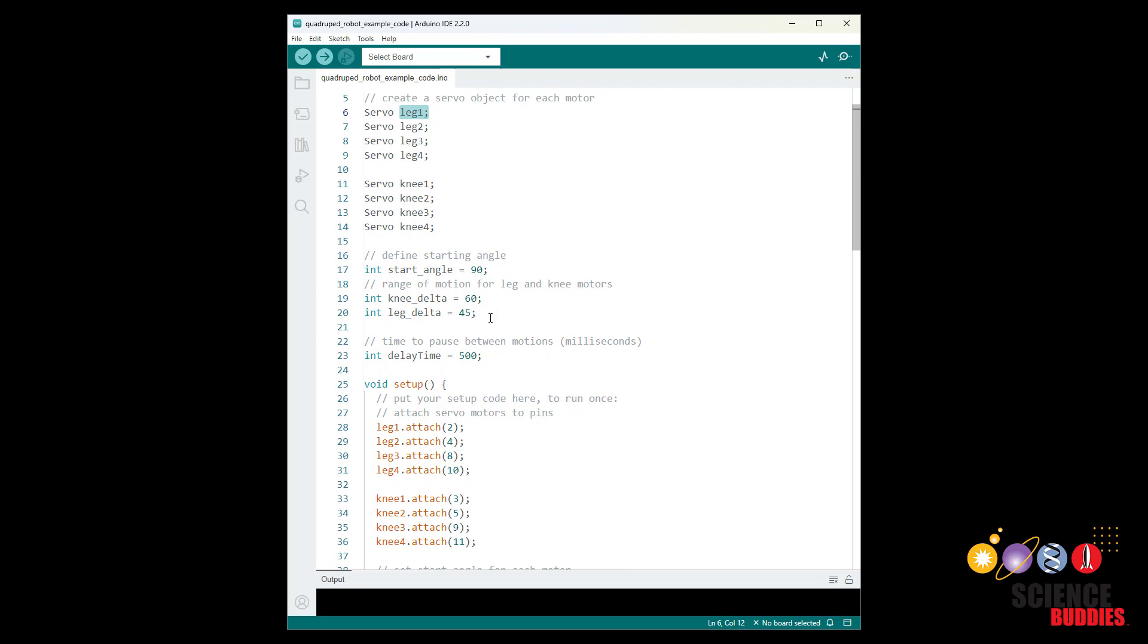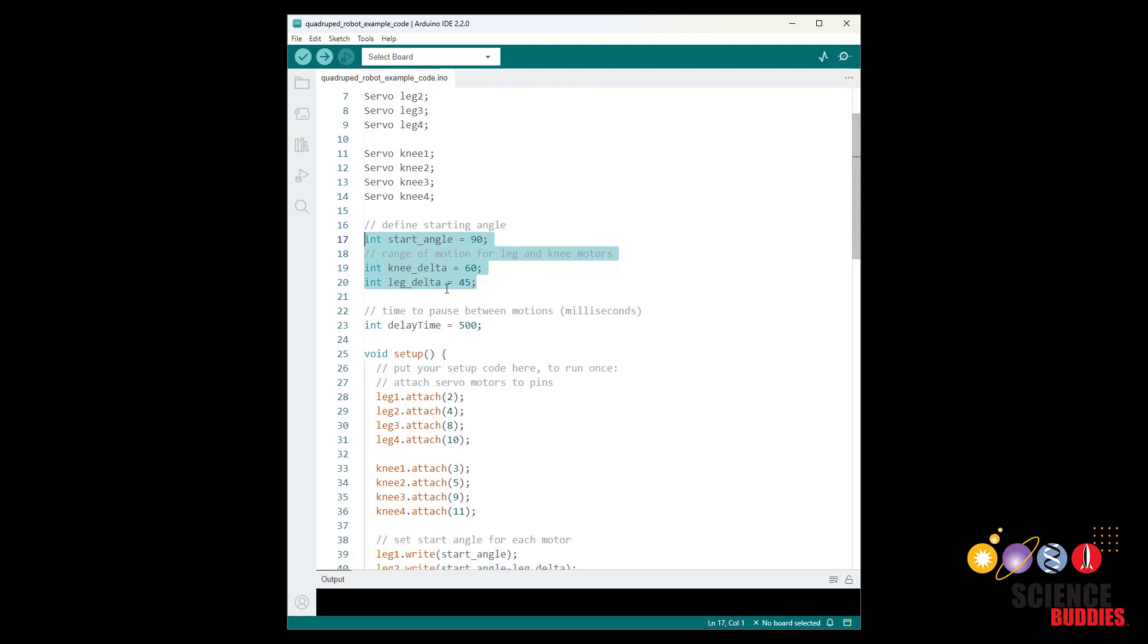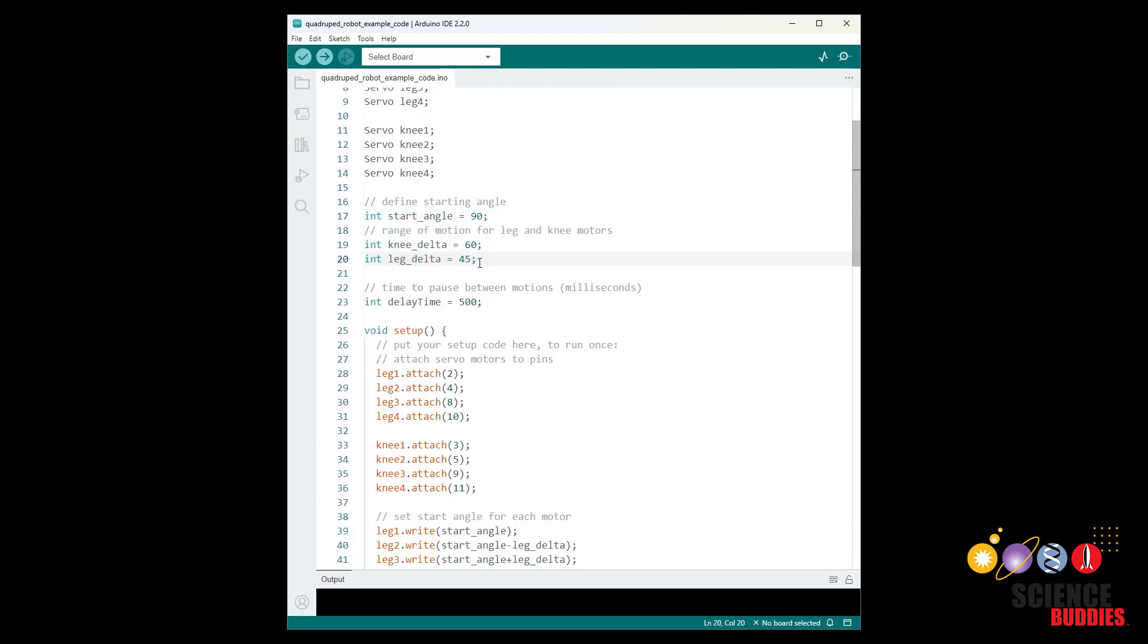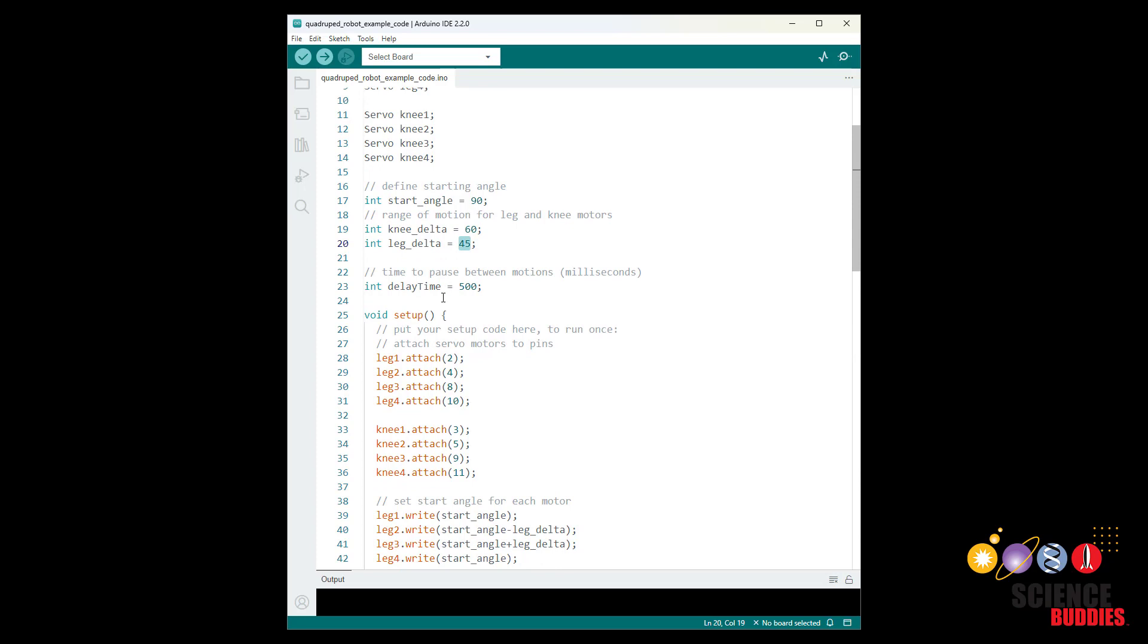It helps to use variables to define the various angles that you want to move the legs to so you aren't just hard coding numbers into your program. That way if you want to change something like the range of motion for the legs you just have to change a single number and that will then update in the rest of your code since you used a variable.